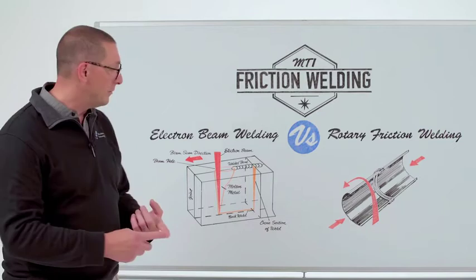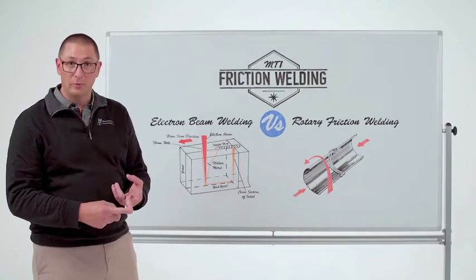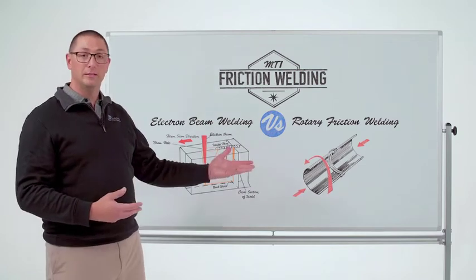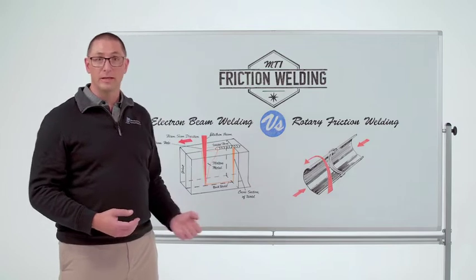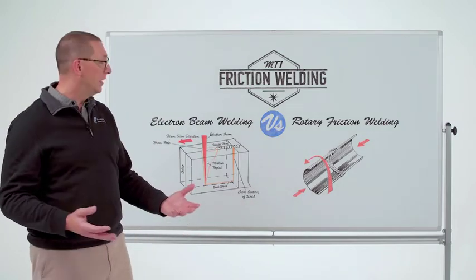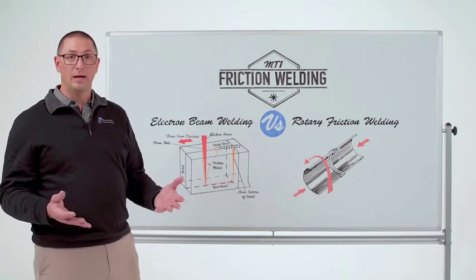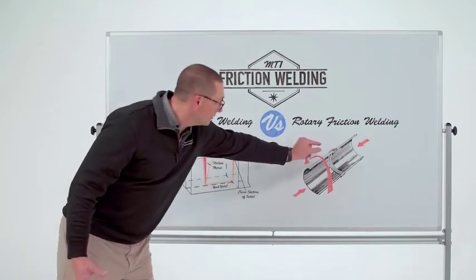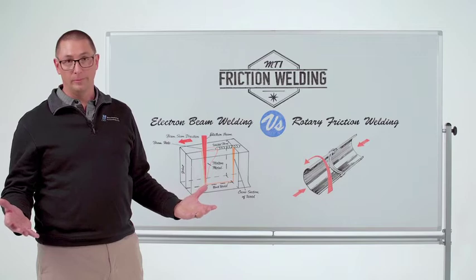Friction welding is not done in an atmosphere-controlled environment. There's very little pre-machining that you need to do, but there will be post-machining. The biggest difference between the two processes is that a friction weld is a solid-state joining process, so you're getting parent material strength in most cases, compared to a melted product. Therefore, with an EB weld, you may have to increase the thickness of the part.